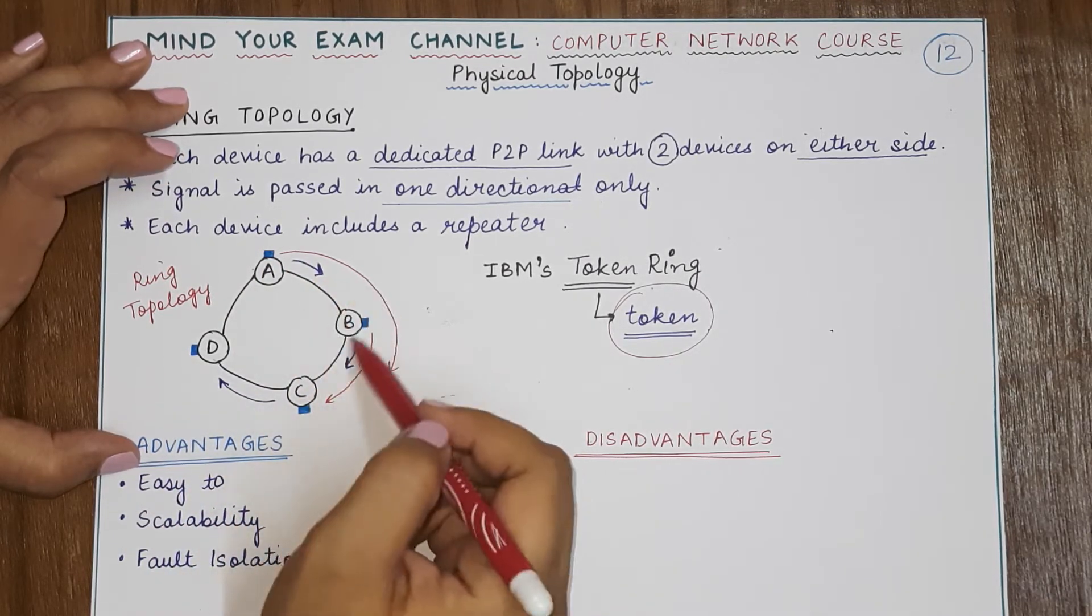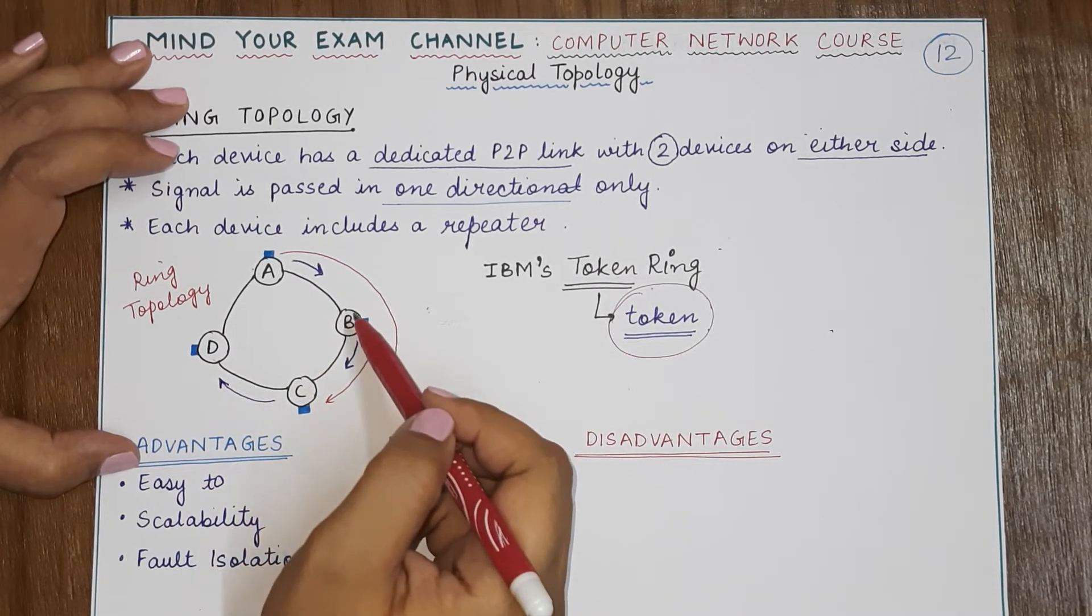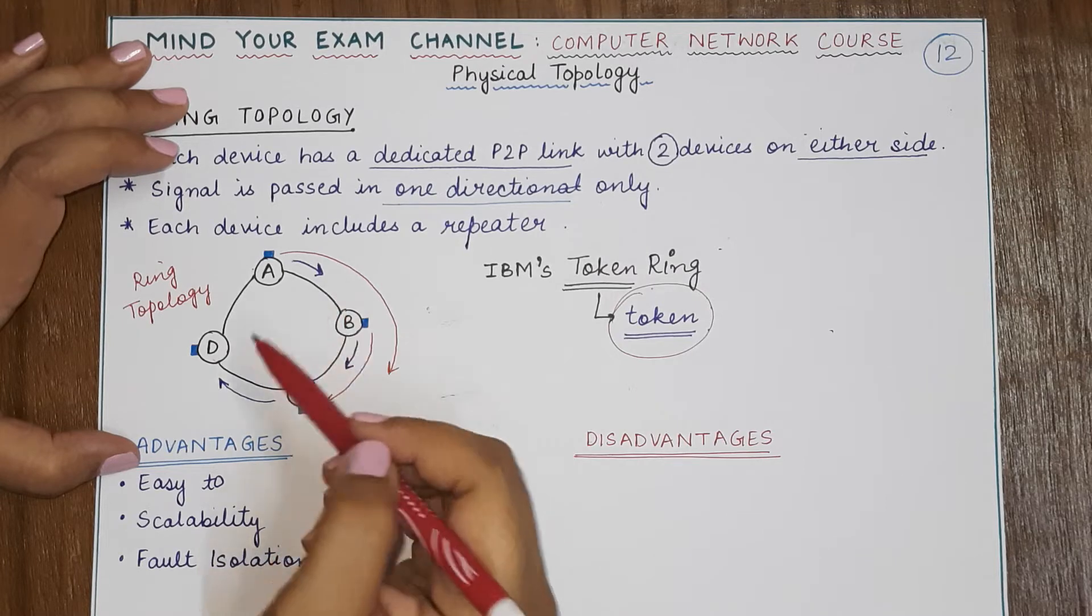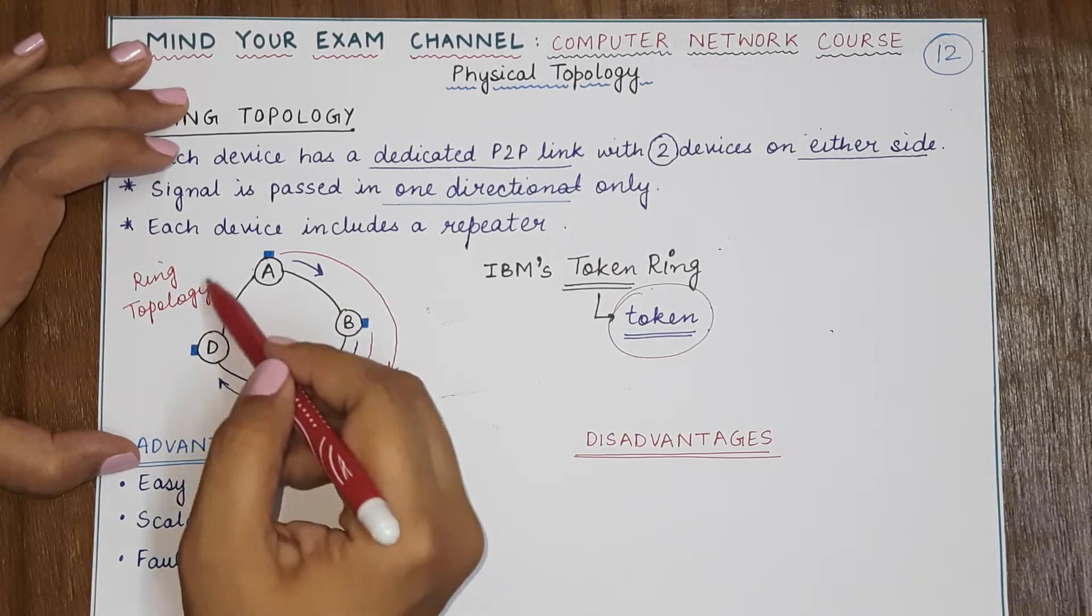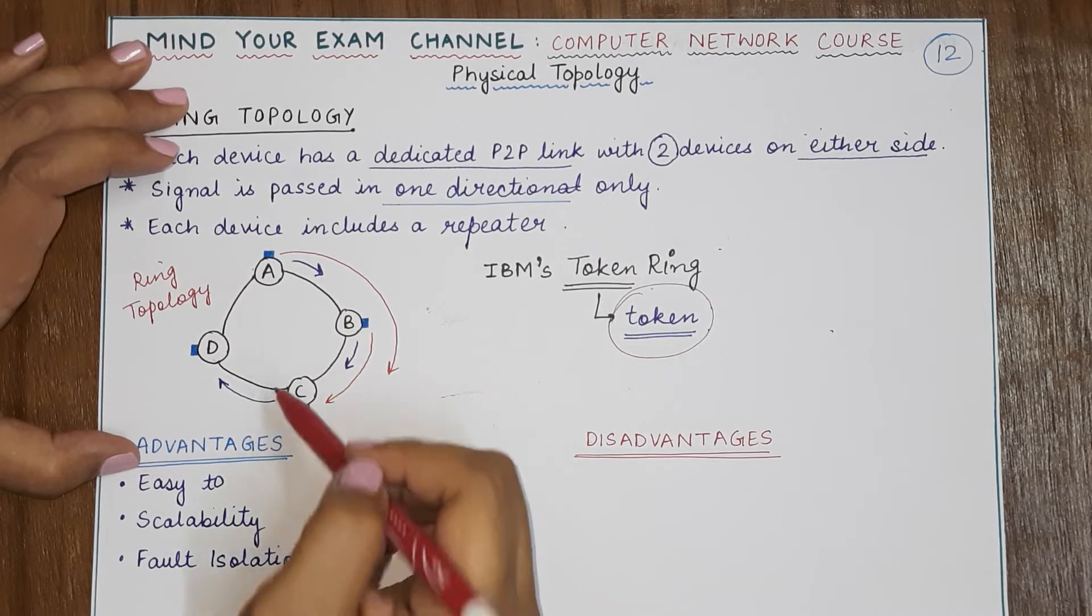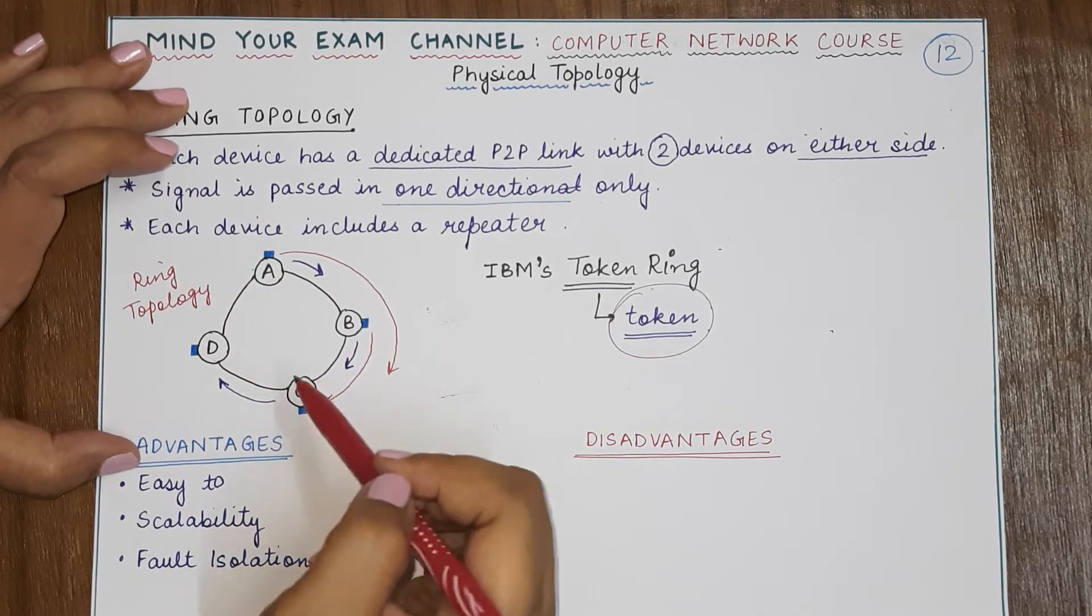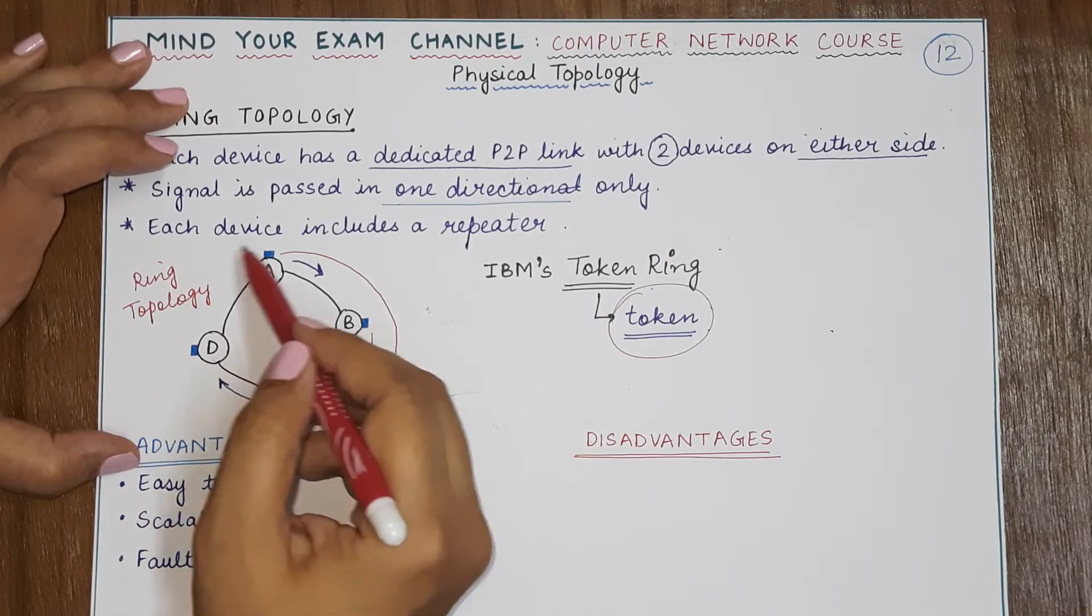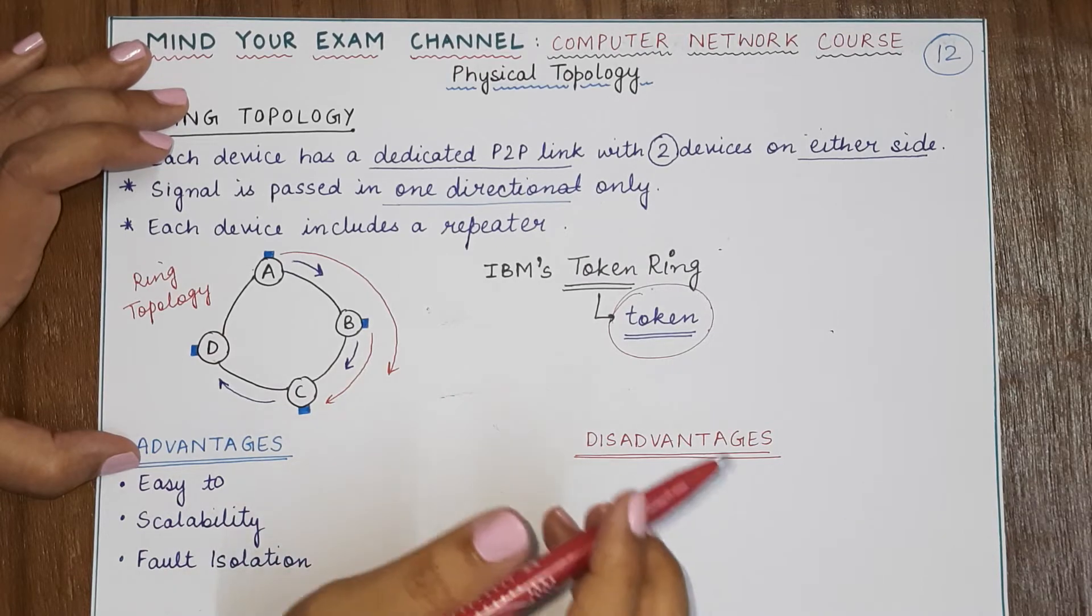And if the next device in this ring has to send some data, it will use its token when it gets the token and send the data. At that time, no other device will send data. Each device will get the token at some point, and only then they will be sending data so that proper communication can happen.